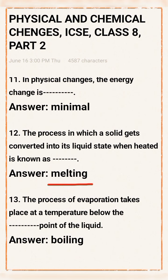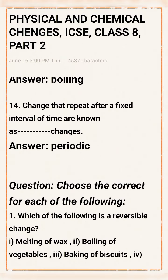Question 13: The process of evaporation takes place at a temperature below the ___ point of the liquid. Answer: Boiling. Question 14: Changes that repeat after a fixed interval of time are known as ___ changes. Answer: Periodic changes.